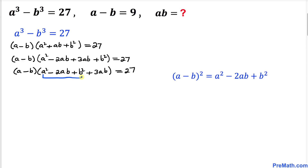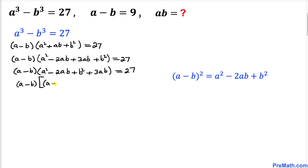Let's focus on a squared minus 2ab plus b squared. Using the famous identity, this equals a minus b, whole squared. So I can write a minus b times the quantity a minus b squared plus 3ab equals 27.